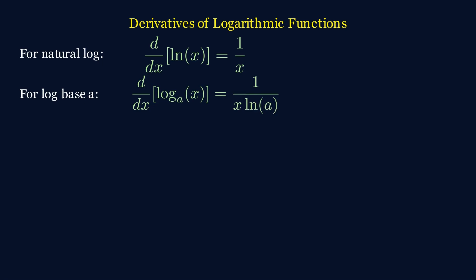We divide by x times ln of a. That little ln of a comes from changing the base. It's easy to forget, but it's always there in the denominator.